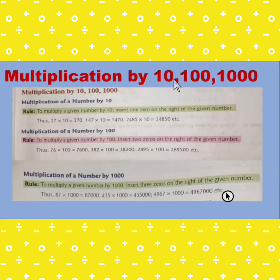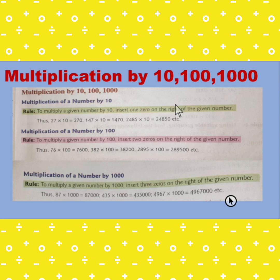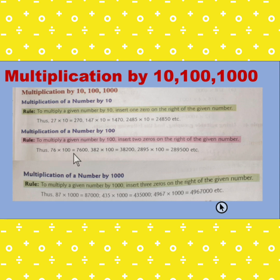Next is multiplication by 10, 100, and 1000. To multiply a given number by 10, insert one zero on the right of the given number. For example, 27 multiplied by 10 — we put one zero after 27 and get 270. Similarly, to multiply by 100, insert two zeros on the right of the given number. For example, 76 multiplied by 100 gives 7600.